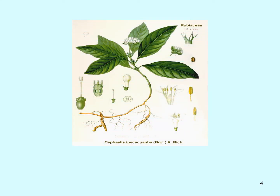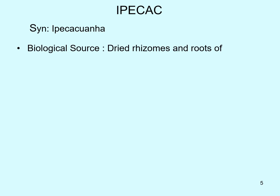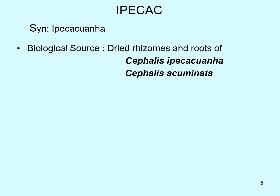The plant of Cephalis Ipecacuna is shown in the picture. Ipecac, also called Ipecacuna, is obtained biologically as dried rhizomes and roots from Cephalis Ipecacuna as well as Cephalis acuminata, both belonging to the family Rubiaceae.